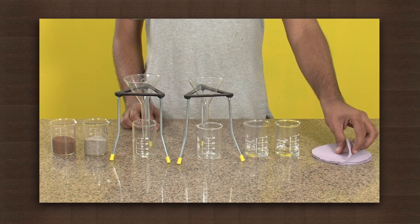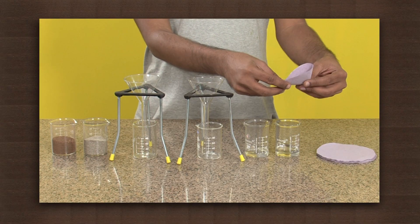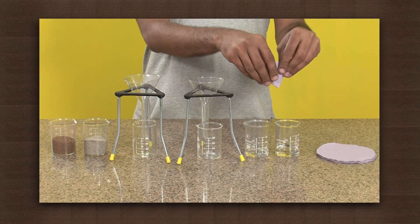First we will make two cones of filter paper and place them in each funnel. Place an empty beaker under each funnel.